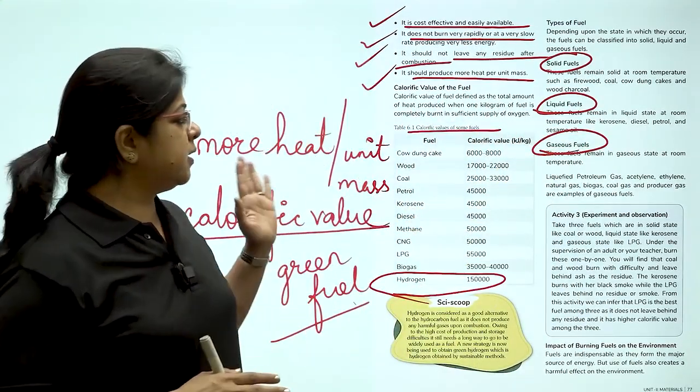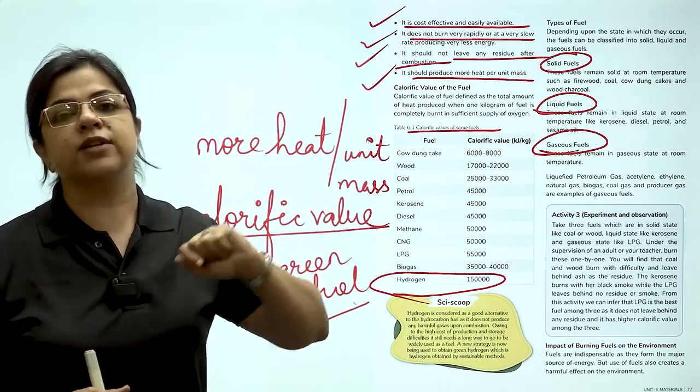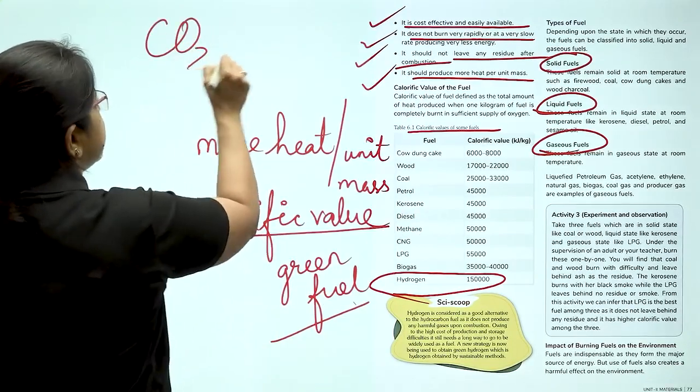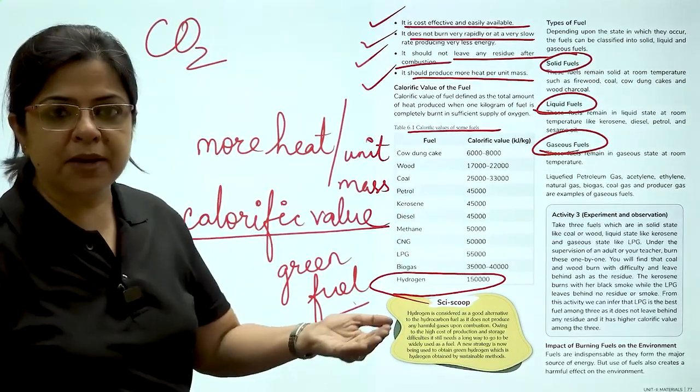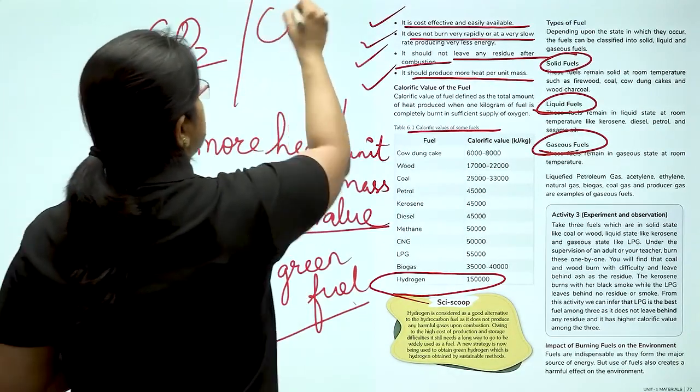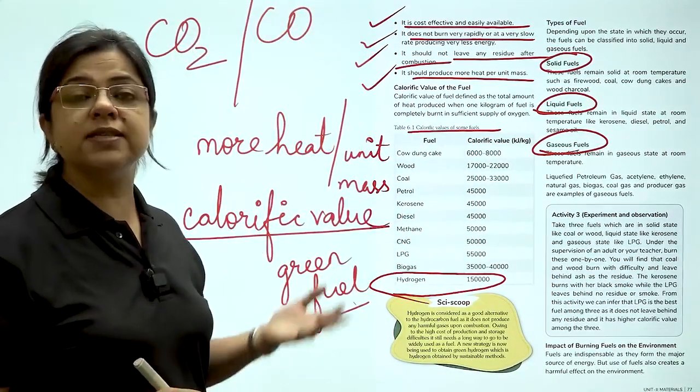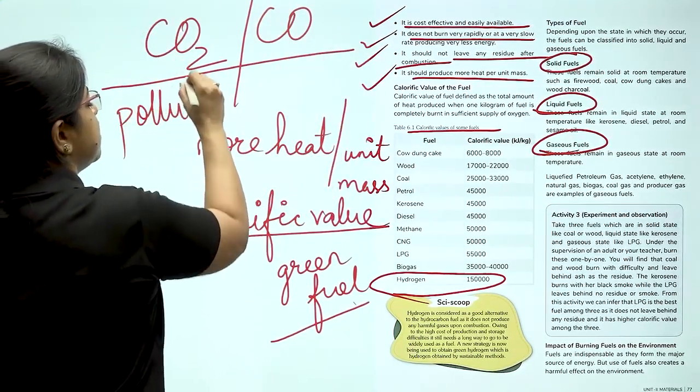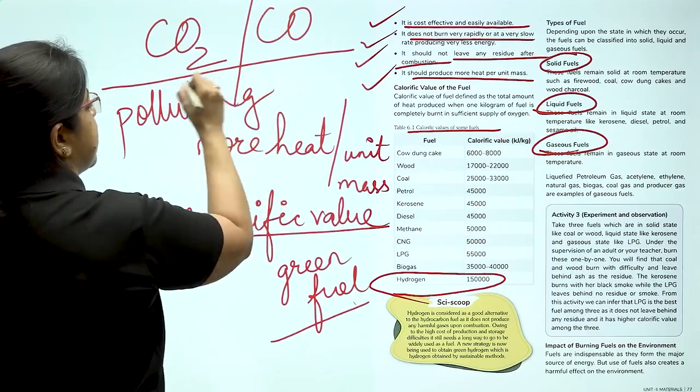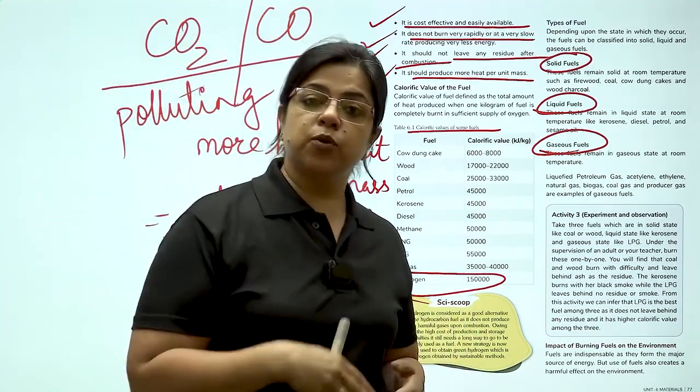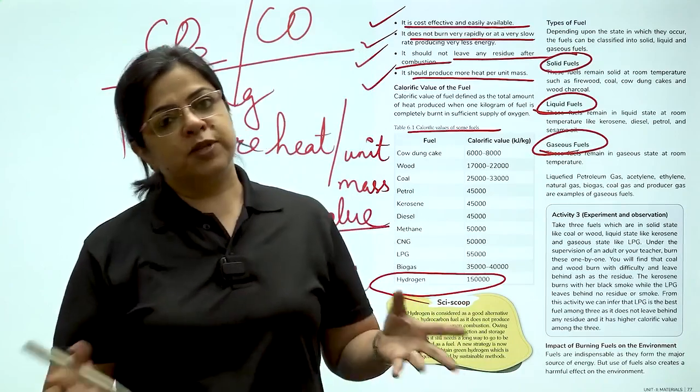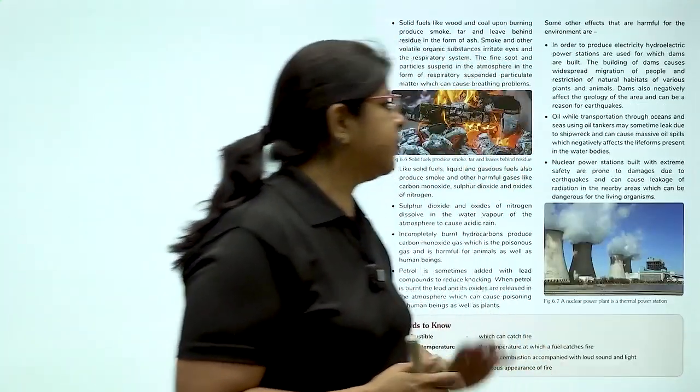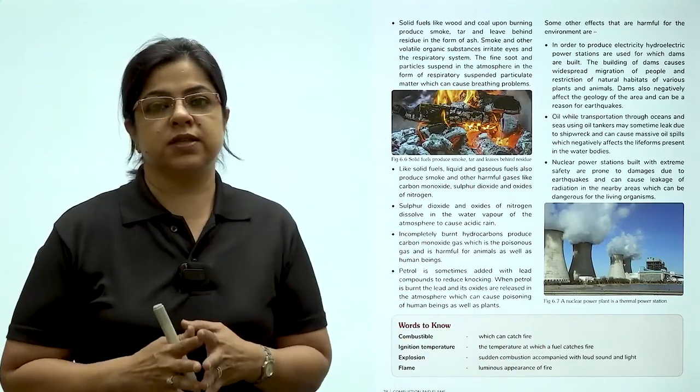Now, whether you are burning liquid fuel, solid fuels or gaseous fuels, what are you emitting in the environment? You are releasing carbon dioxide in case complete combustion is taking place or you are releasing carbon monoxide in case incomplete combustion is taking place. In both the cases, what are you doing? You are polluting the environment. So, what do we do? Should we stop moving from one place to another? Should we stop cooking food? No. We have to be wise when we are dealing with these fuels. How?